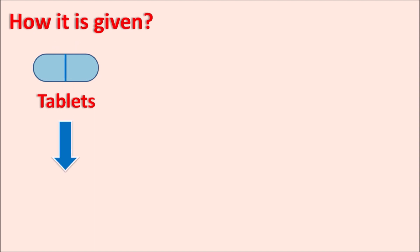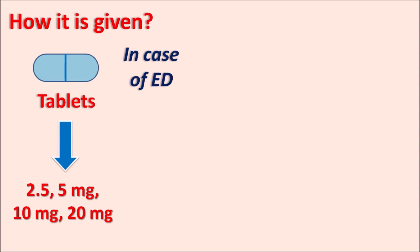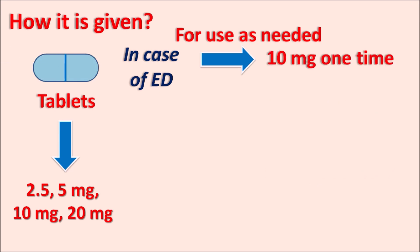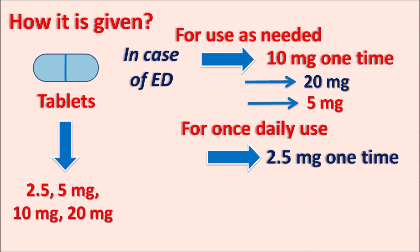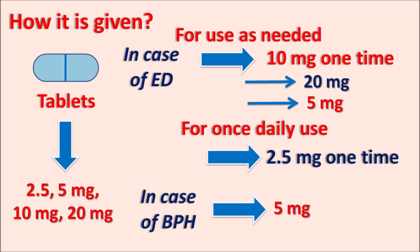How is it given? This drug is available as a tablet at different strengths: 2.5 mg, 5 mg, 10 mg, and 20 mg. The dose depends on the type of indication. In case of erectile dysfunction, this drug can be given as needed or as a once-daily dose. For use as needed, the initial dose is 10 mg, taken one time before intercourse, and the dose can be increased up to 20 mg or reduced to 5 mg in case of renal or hepatic impairment. For once-daily use, the dose is 2.5 mg once daily at approximately the same time every day. For treatment of BPH, the initial dose is 5 mg once daily.